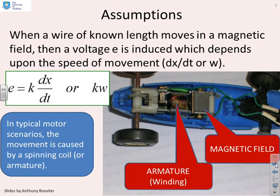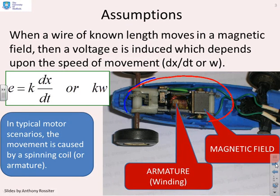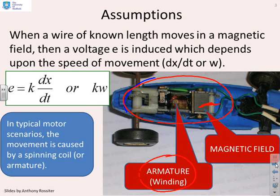First, let's have a picture of a typical DC servo. We've used a Scalextric car because that gives a lovely view of a typical DC servo and its components. You can see the magnetic field here, supplied by this big magnet, and you can see an armature or winding which is sitting inside that magnetic field.